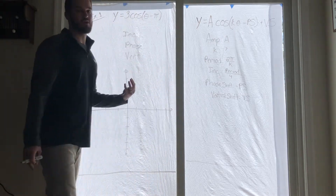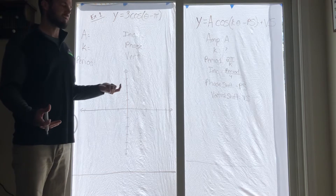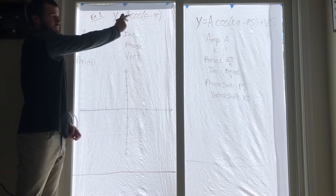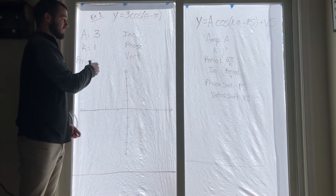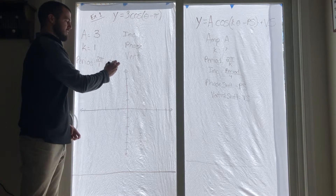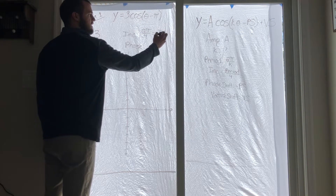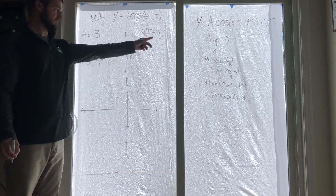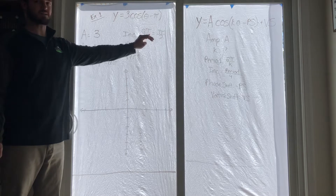The good thing is you guys already know how to do this because it's just like shifting left or right when we were doing regular graphing — it's the same thing. Our amplitude is that first number, three. Our k value is one, which means our period is going to be two pi divided by one, or two pi, and our increments are pi over two.